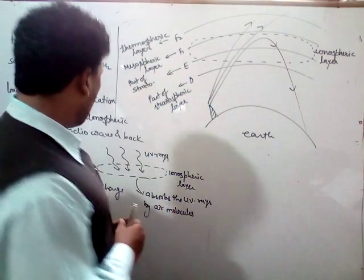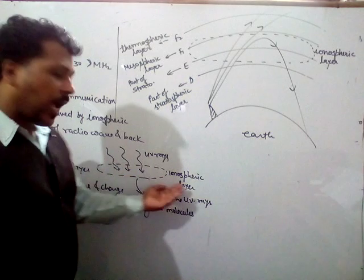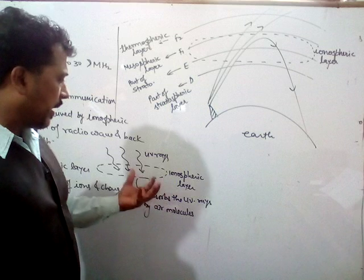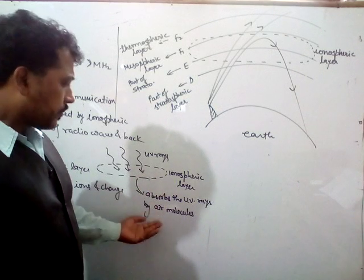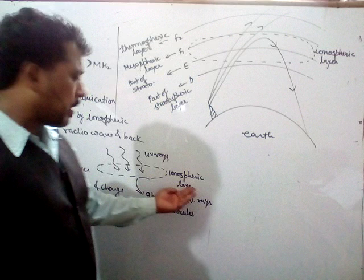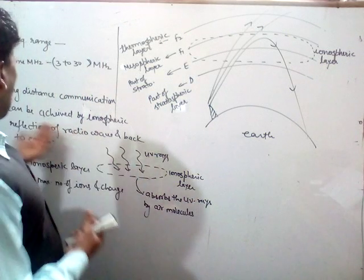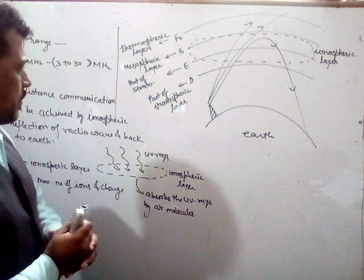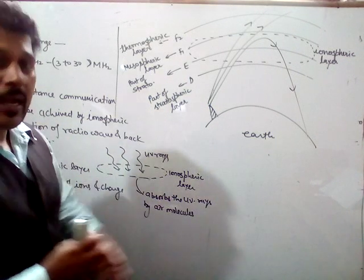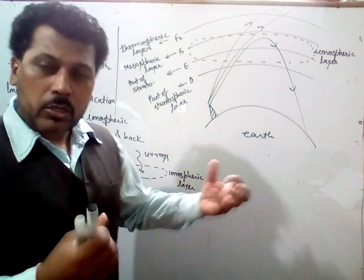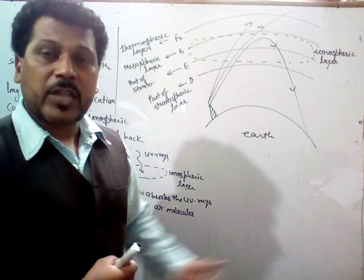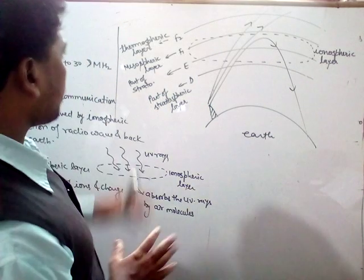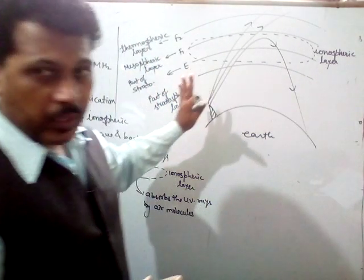In the ionospheric layer, maximum ultraviolet rays get absorbed by the air molecules because in this layer a large number of charged particles and ions are present. These UV rays get absorbed by those charged particles and ions, or simply by the air molecules. This is the ionospheric layer relevant to the propagation of sky waves.